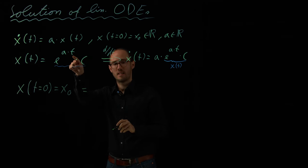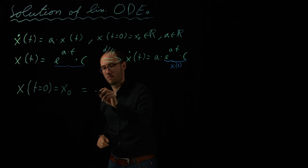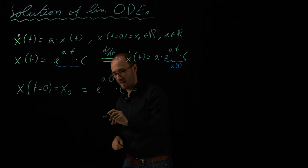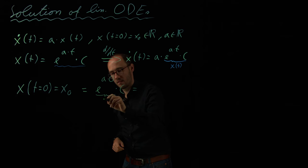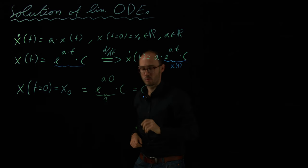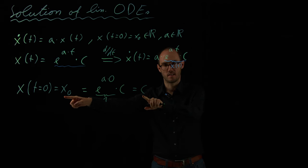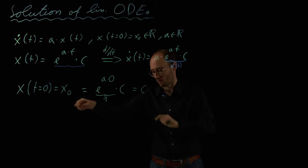And this is, if I just plug in t for t being zero. So, e to the power of A times zero. So, that here is obviously one. And what remains is C. So, we can see that x zero is actually C. So, we have found the solution for C.